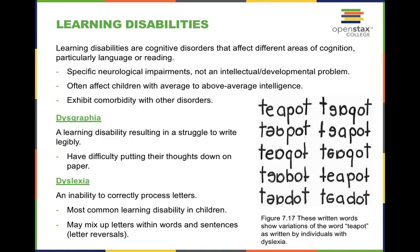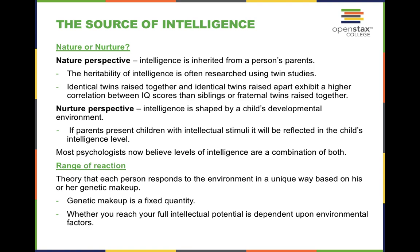Dyslexia is not an indicator of low intelligence — it often happens to individuals who are of above average intelligence. One of the smartest children I know has dyslexia but is very, very intelligent. It is a learning disability, not an intellectual disability. It may slow them down a little bit in certain areas, but overall they are very smart.